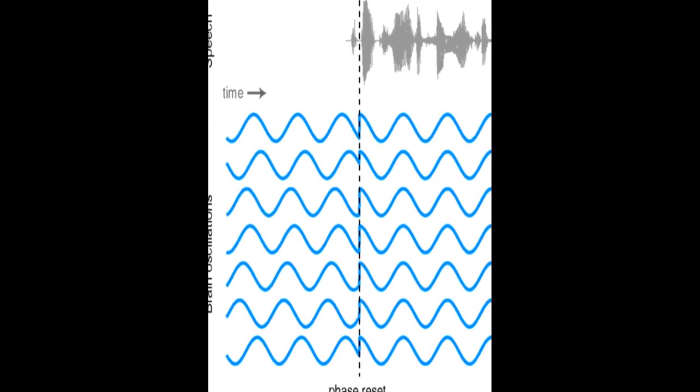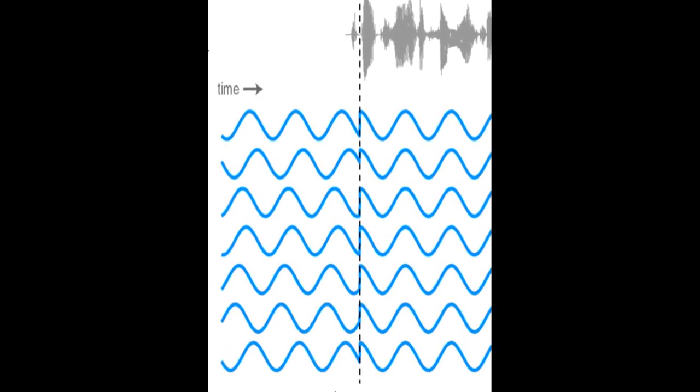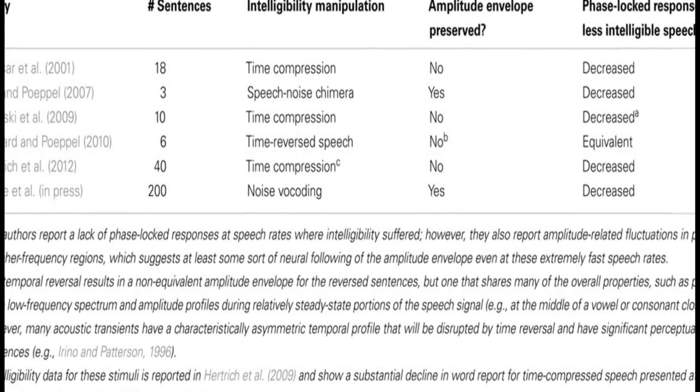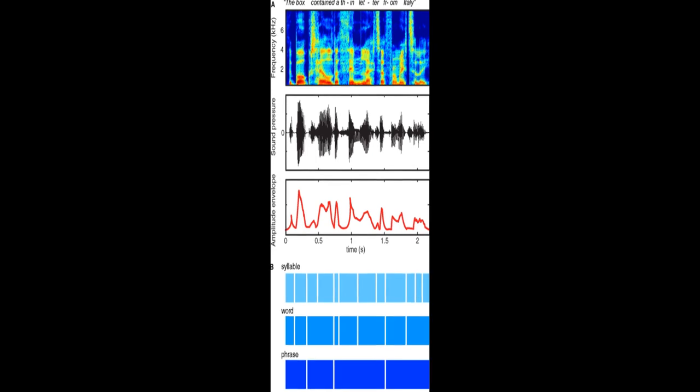The article discusses the importance of speech rhythm and how it is conveyed through amplitude modulations and the slow rhythmic information contained in speech. It explains that listeners rely on this information to understand place and manner of articulation, segmental information, and speech rate.